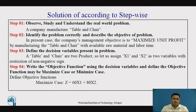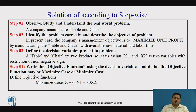The first step is to observe, study, and understand the real world problem. We have observed it is a manufacturing company that manufactures the table and chair. We have studied that they are interested to find out the appropriate utilization of resources to maximize the profit. After identifying the problem, our objective is to define the objective function. In the present case, the company management's objective is to maximize the unit profit, with optimum utilization of the raw material as well as labor time.